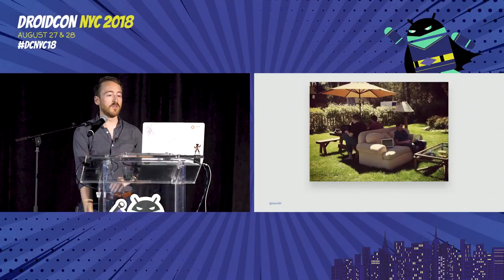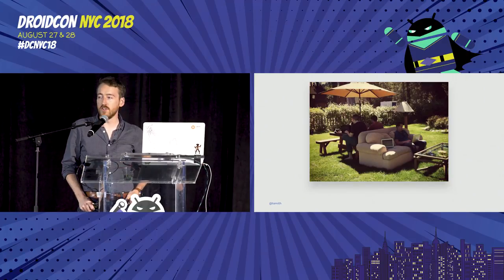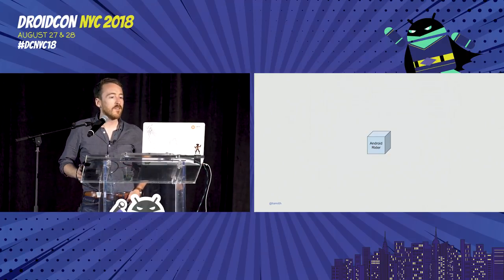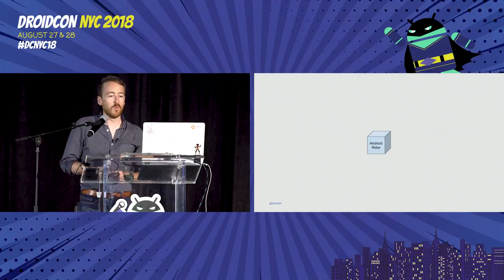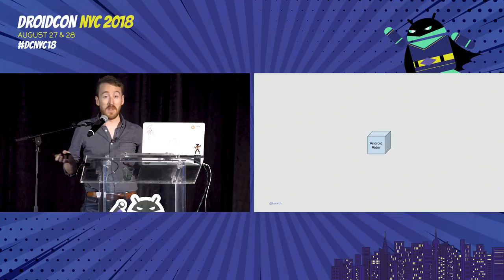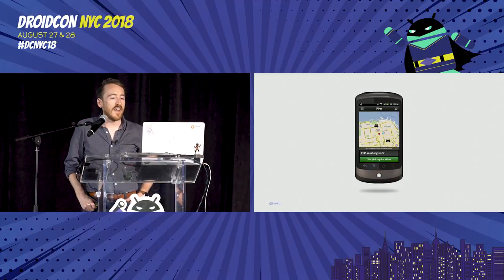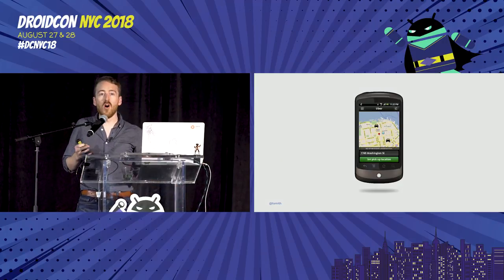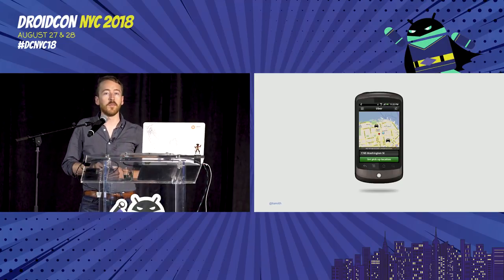When Uber was a small company, there was just a small group of mobile engineers who could easily communicate with each other and share knowledge. It wasn't much of an issue. That team could build one app in one repo using the tools that made sense at the time, like Ant and Eclipse. And that app was a really small app with a really tight focus — just a great, solid MVP.